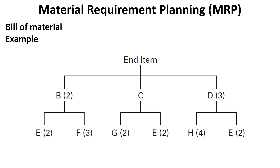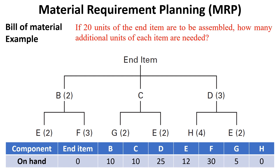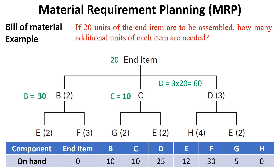Another example. This figure illustrates the product structure tree of an end item, while the table shows the quantity on hand from each item. If twenty units of the end item are to be assembled, how many additional units of each item are needed? In the first level, the number of B's required equals two multiplied by twenty equals forty; subtract ten B's on hand, resulting in thirty. The number of C's equals one multiplied by twenty equals twenty; minus ten on hand equals ten. The number of D's required equals three multiplied by twenty equals sixty; subtract twenty-five D's on hand, resulting in thirty-five.